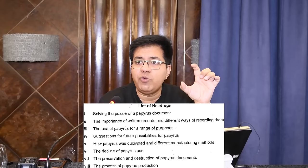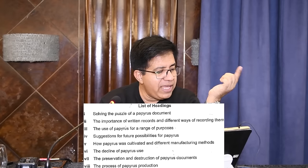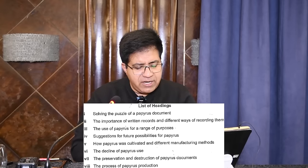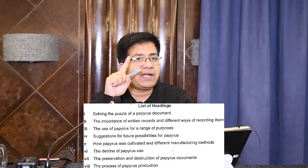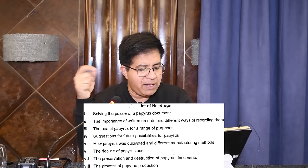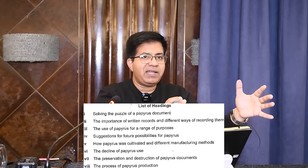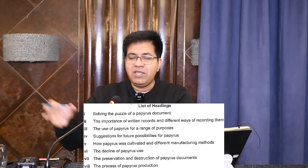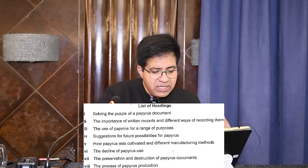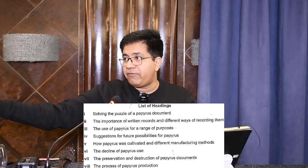Heading number one: 'Solving the Puzzle of a Papyrus Document' — in one paragraph they will talk about the myth of papyrus documents and how to solve that. Heading number two: 'Importance of Written Records and Different Ways of Recording Them' — they will say written documents are very important, we have ID cards, certificates, etc. Heading number three: 'Use of Papyrus for a Range of Purposes' — with papyrus people made boats, baskets, rope. Heading number four: 'Suggestions for Future Possibilities for Papyrus' — mostly in the last paragraph, if any.